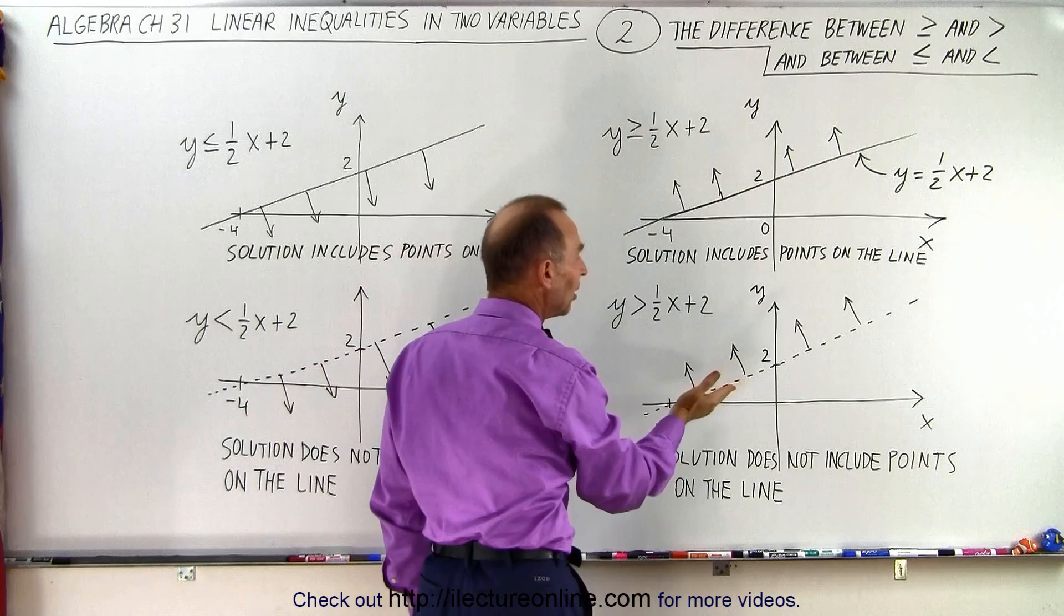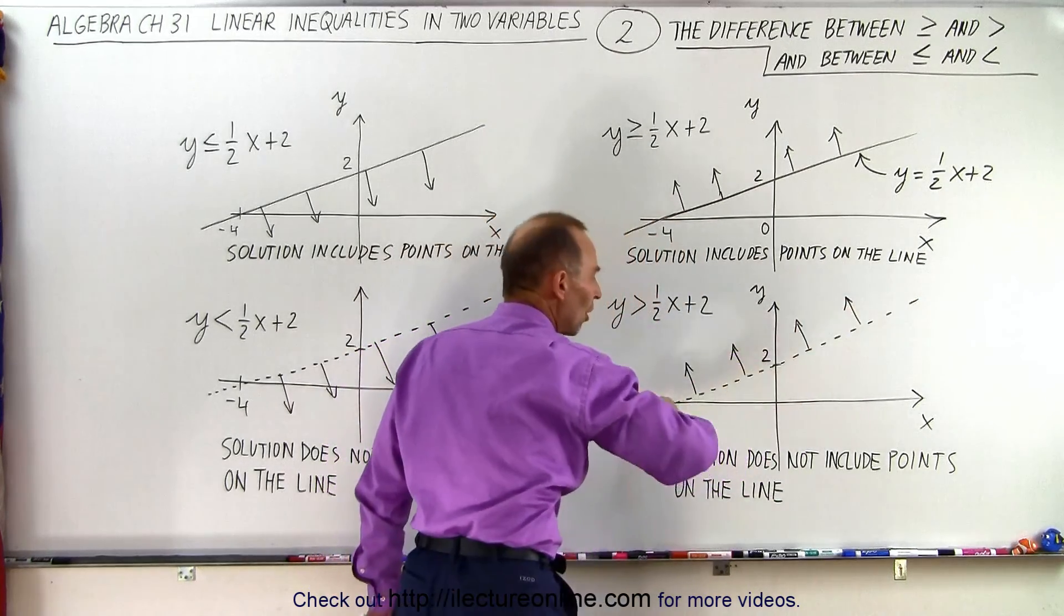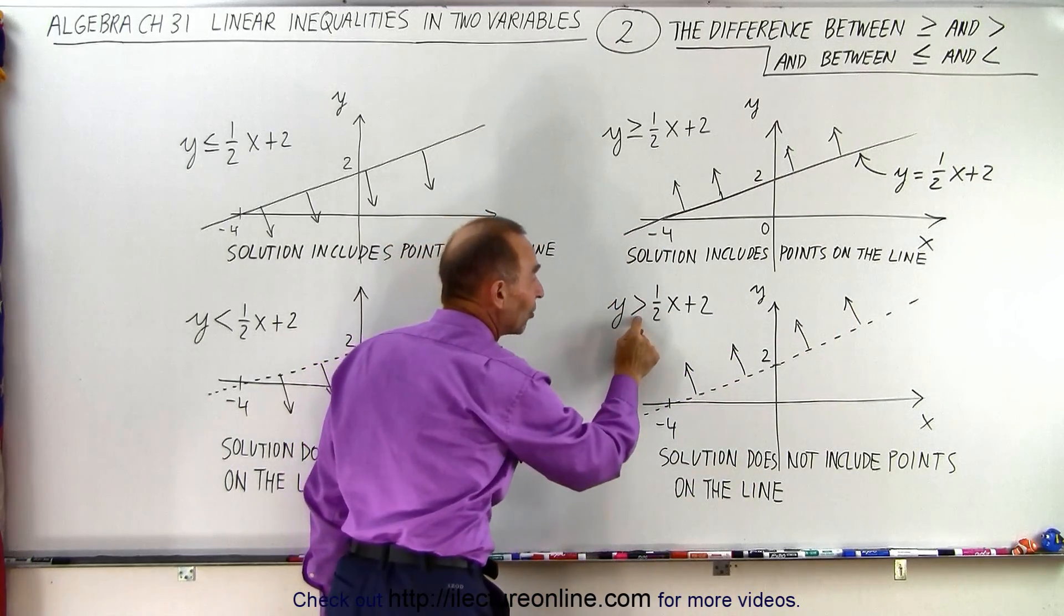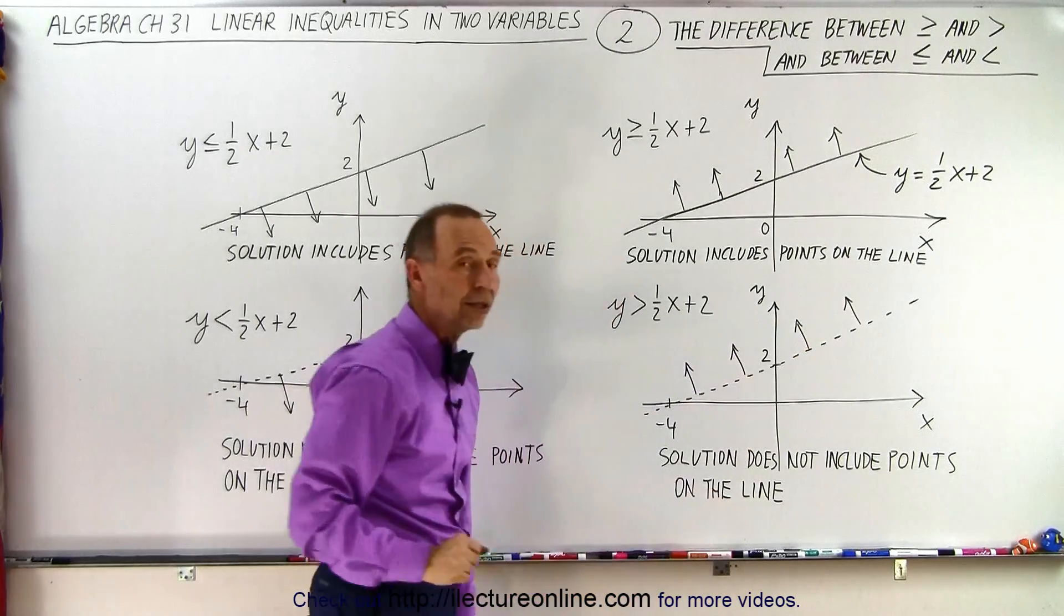Here, the same thing, but the points on the line are not included. So instead of drawing a solid line, we draw a dashed line. The dashed line indicates that the equal sign isn't there, so we only consider the points above the line and not include the points on the line.